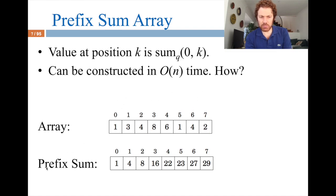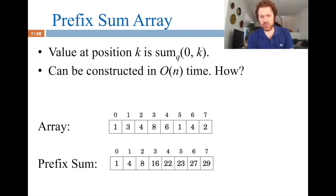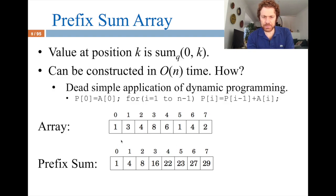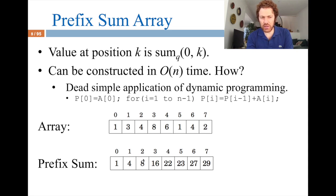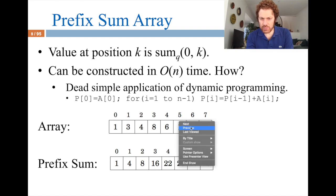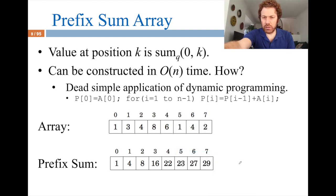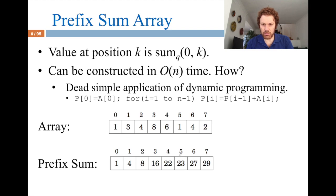The first data structure is the prefix sum array. It is literally an array, but with very smart entries: the entry at index i holds the sum of the original array from index zero to i. So for example, if the original values are 1, 3, 4..., the entry at index 2 would be 1 plus 3 plus 4 equals 8. Similarly, further entries accumulate up to 23.